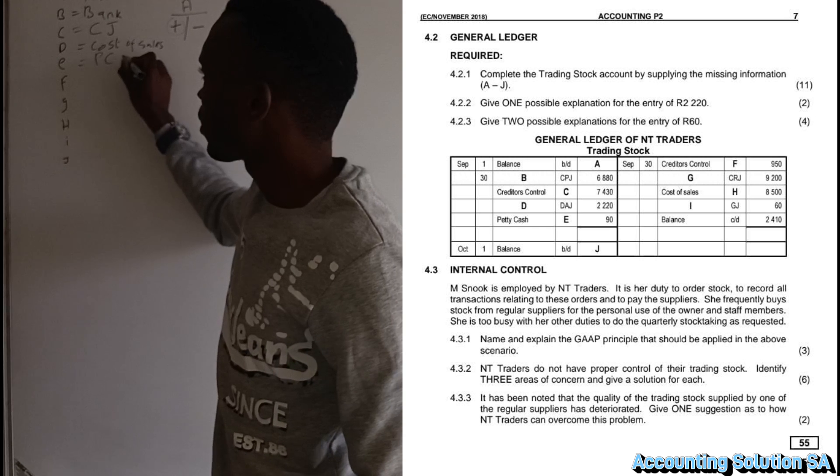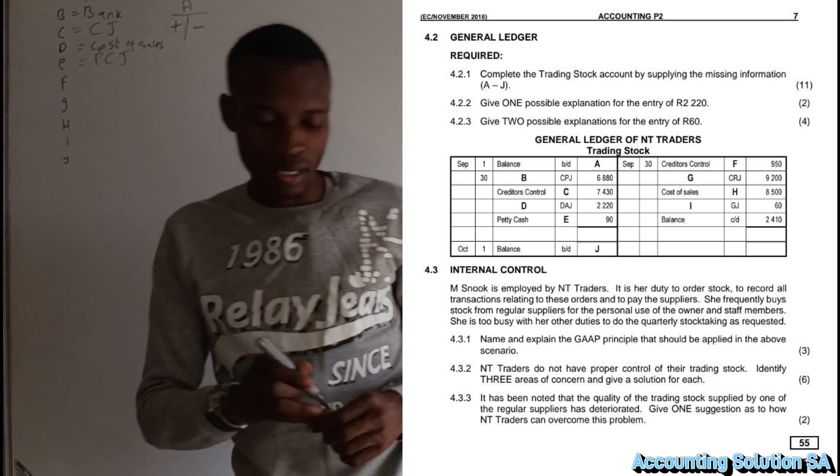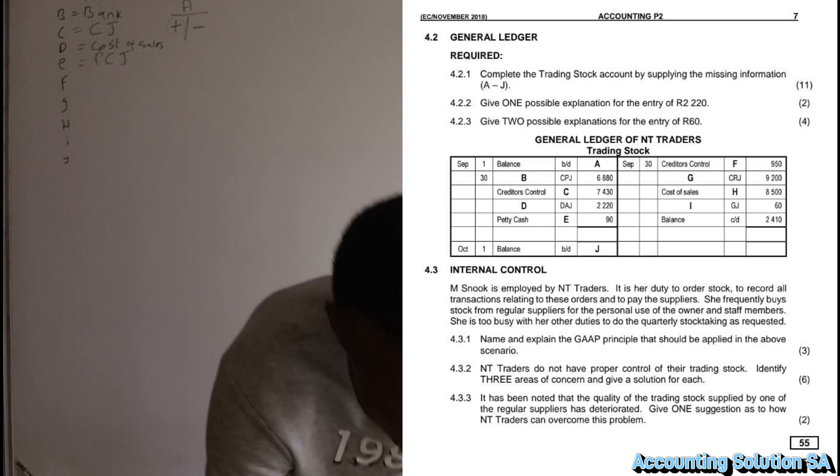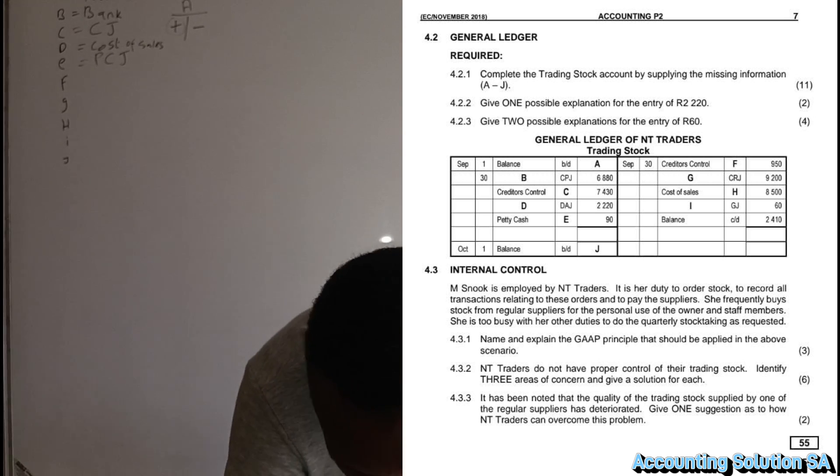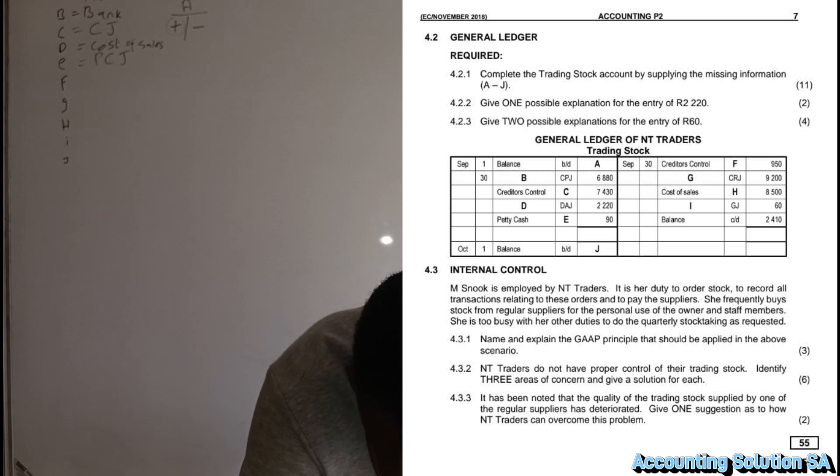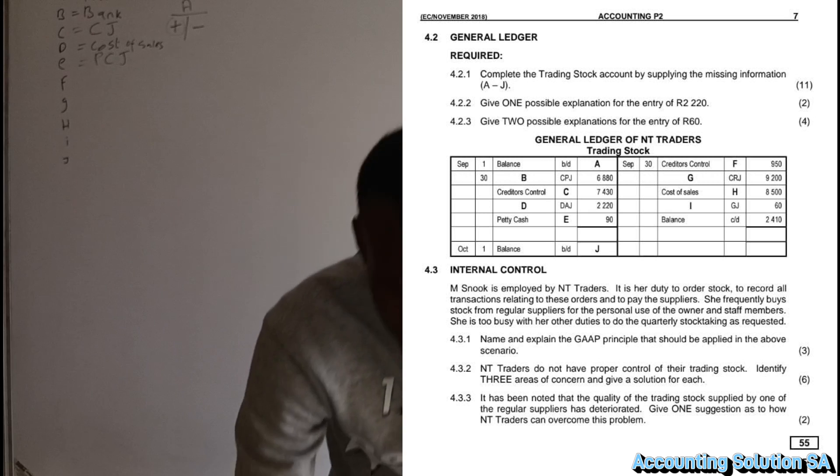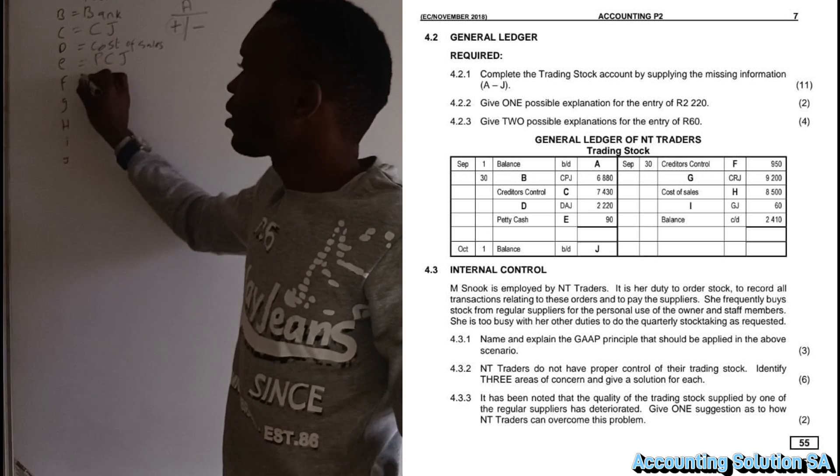Number F, creditors control, which is on the credit side, number F is going to be CAJ, creditors allowance journal.